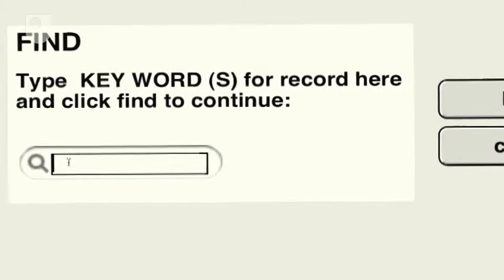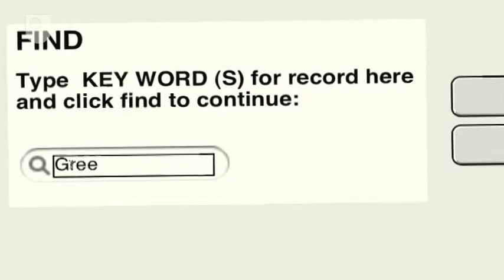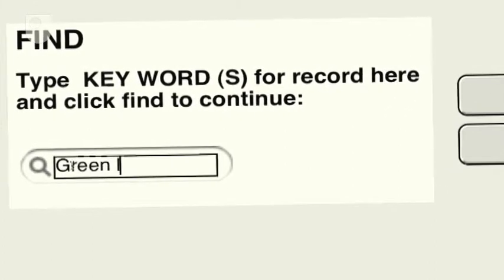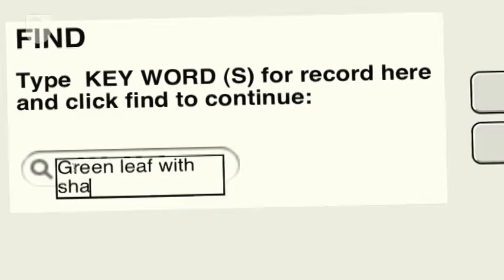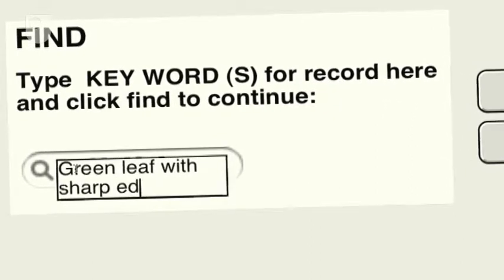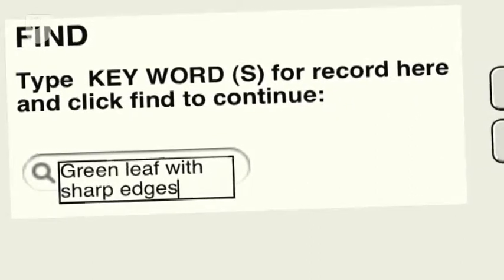Traditionally, people would search very large collections by entering some text describing what they're looking for. In order to do this type of search, somebody would have had to have sat down and described each of the media objects — that is the images or the video — in words. The problem with this is it's very expensive and very time consuming.